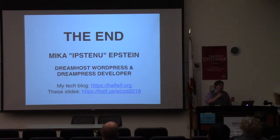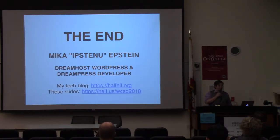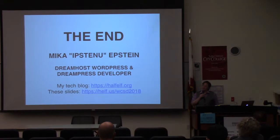My name is Mika Epstein. Most people know me as Ipstenu. I work for DreamHost as a WordPress and DreamPress developer, playing with a full stack. The cloud I use for this experience is DreamObjects, but it happens on Amazon S3 too. The site that runs the code is built on DreamPress, and DreamHost is kind enough to support me — not just coming to events like this, but to run that site on DreamPress as a bit of a canary, to test and explore how we can make hosting better for everyone, but also how to make WordPress better for everyone, no matter where they host.